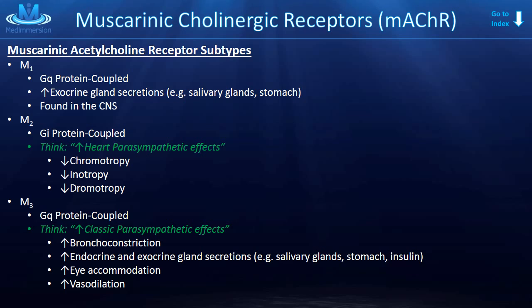M2 receptors are GI protein-coupled. Think of M2 as increasing parasympathetic effects on the heart — a decrease in chronotropy, inotropy, and dromotropy. M3 receptors are GQ protein-coupled. As a pattern: odd-numbered receptors M1, M3, and M5 are GQ protein-coupled, while M2 and M4 are GI protein-coupled. Think of M3 as increasing classic parasympathetic effects: increased bronchoconstriction, increased endocrine and exocrine secretions — the rest-and-digest response — increased eye accommodation, and increased vasodilation.